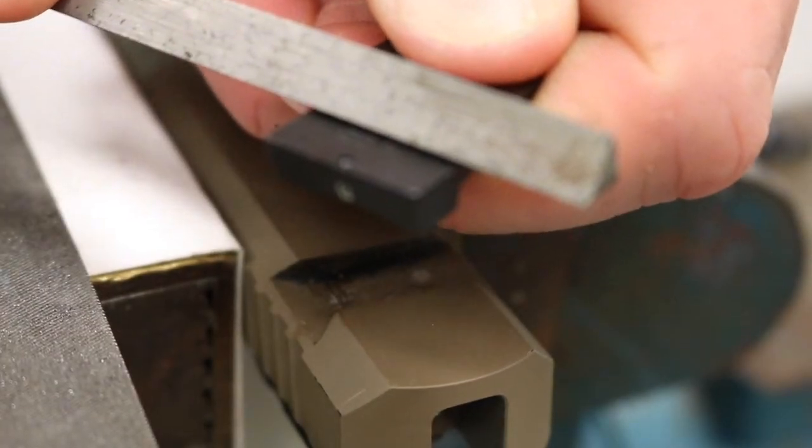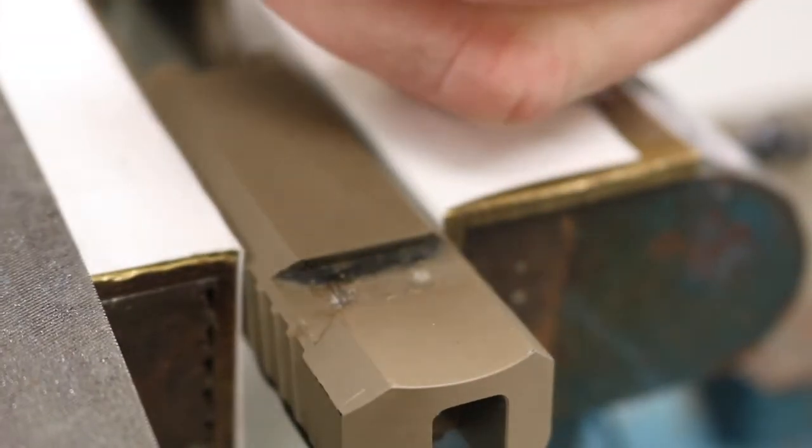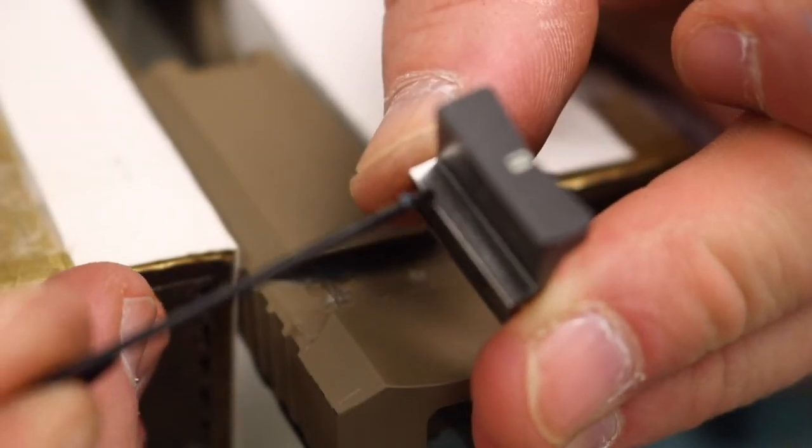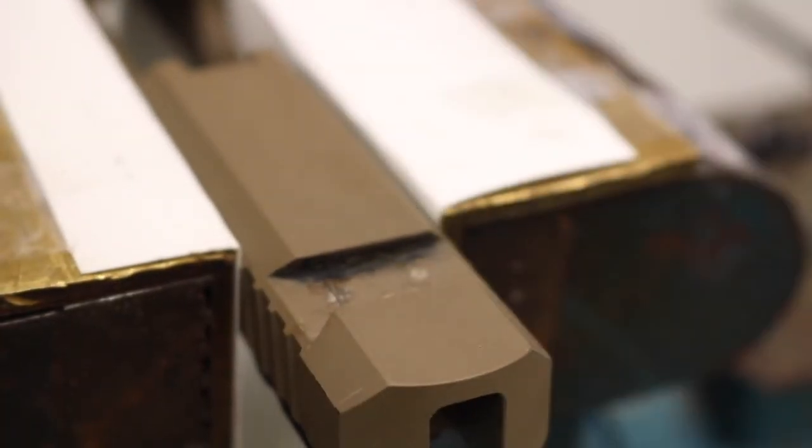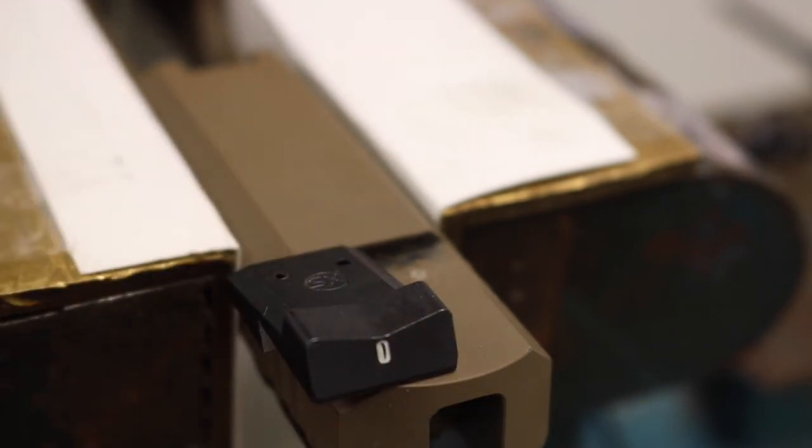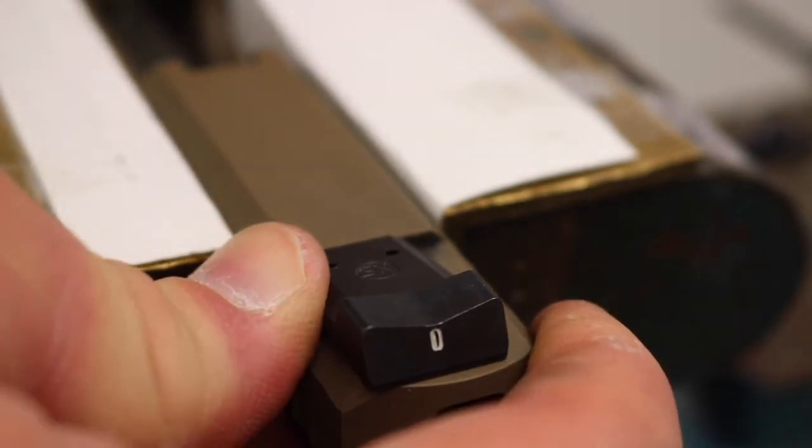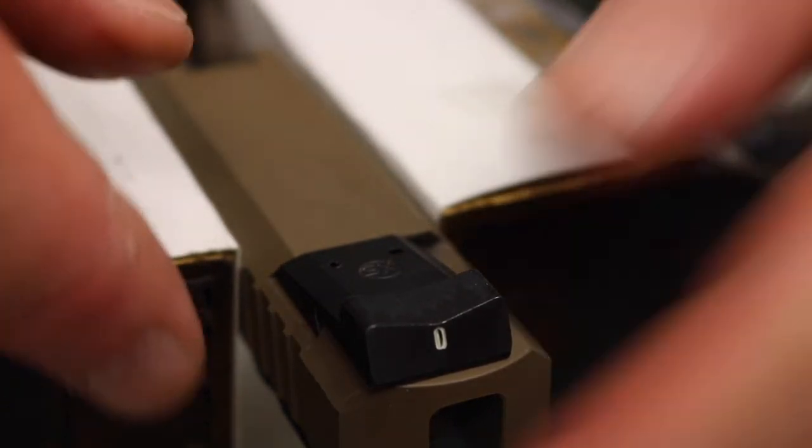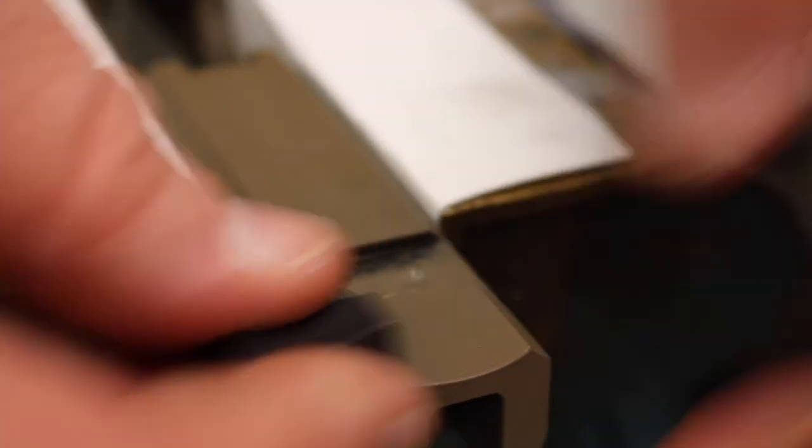And then I'm going to slowly and carefully remove material. As you can see, I've had some material removal here on that angled face. I'm going to go ahead and check it. Starts in just fine. It goes about three quarters under finger pressure, which is okay.